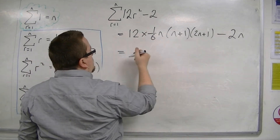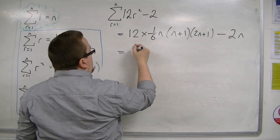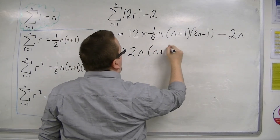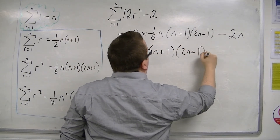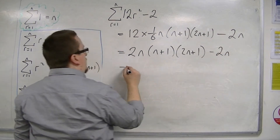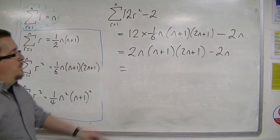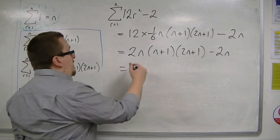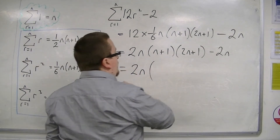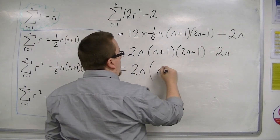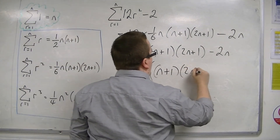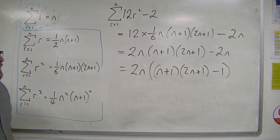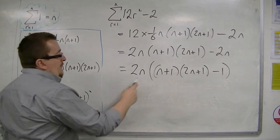So if we just tidy this up a little bit, we've got 12 lots of one sixth — that's 2. So 2n, n plus 1, 2n plus 1, take away 2n. Now we've got these two terms, and they both have a 2n in common, so that's all that I can take outside to the front. We have n plus 1, 2n plus 1, take away 1. That's the factorised part.